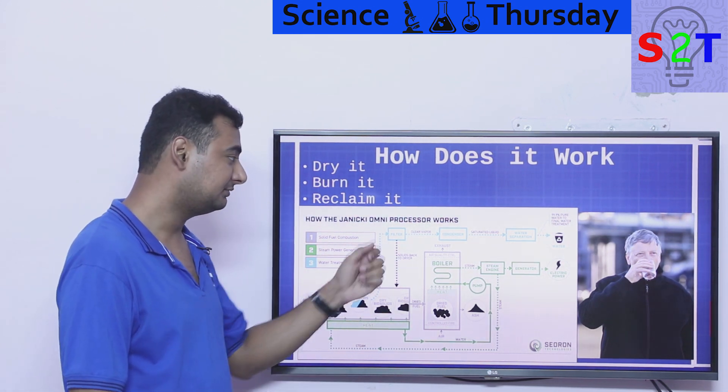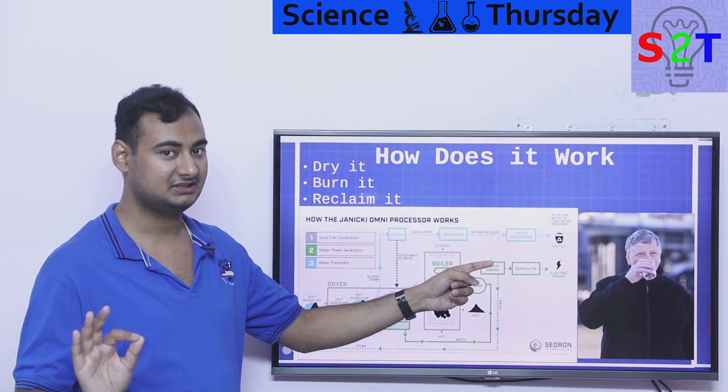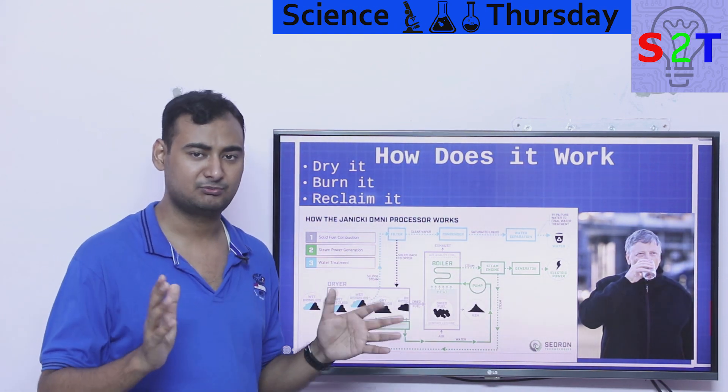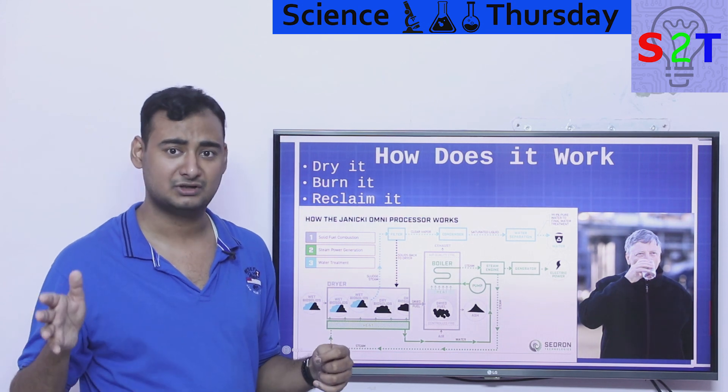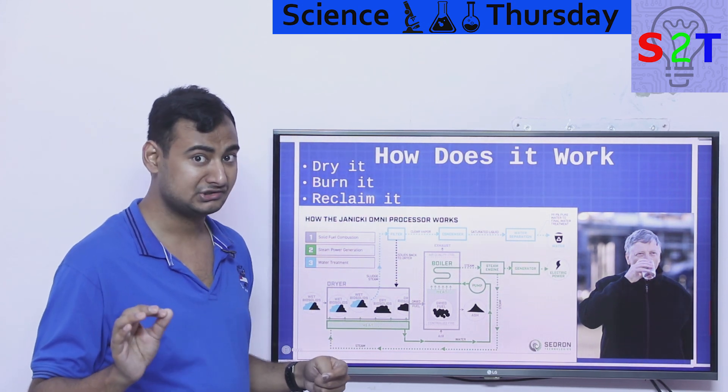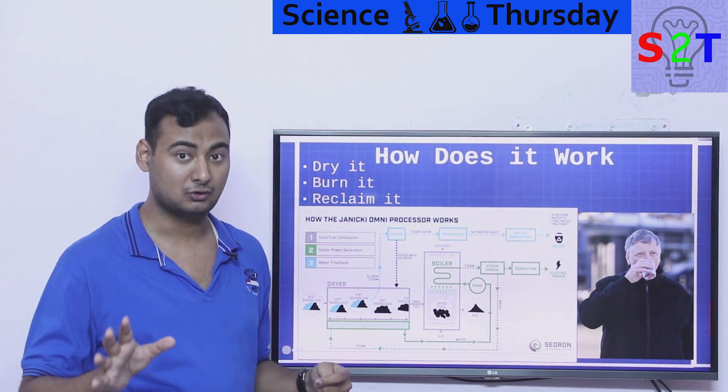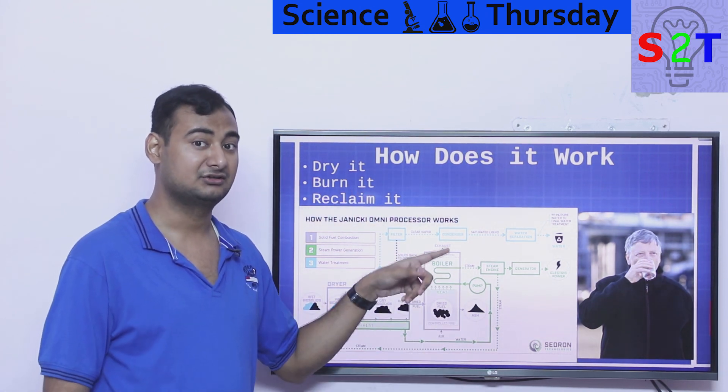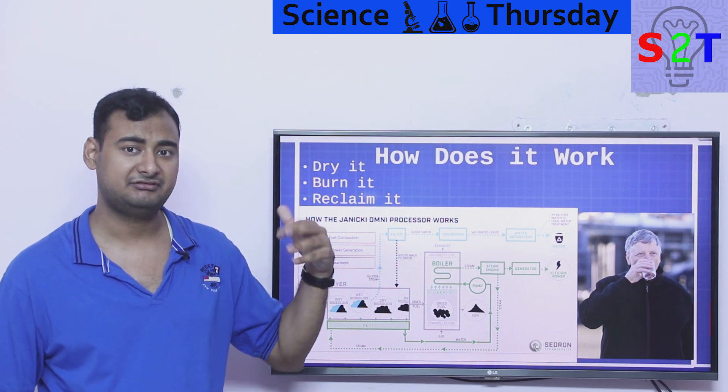So you get distilled water that is very clean. Then you get electricity - for a small plant it's supposed to be 100 to 200 kilowatts. That's not a miniscule amount, that's a good amount that can run a few homes. Then you're also going to get ash.